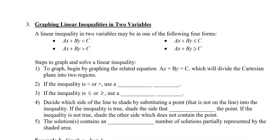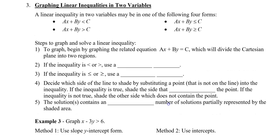This brings us to graphing linear inequalities in two variables. Linear inequalities in two variables may be in one of four forms — they all look the same, the only difference being the symbol: less than, greater than, less than or equal to, or greater than or equal to. Here are the steps to graph and solve a linear inequality. First, graph the related equation — pretend the inequality symbol is just an equals sign.